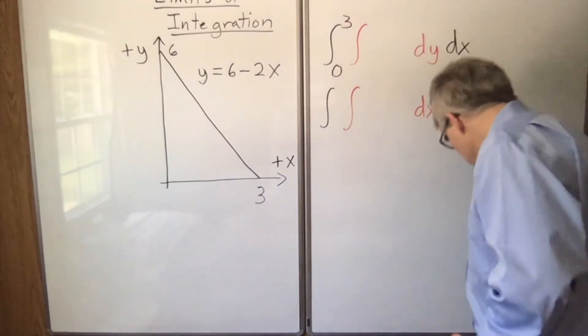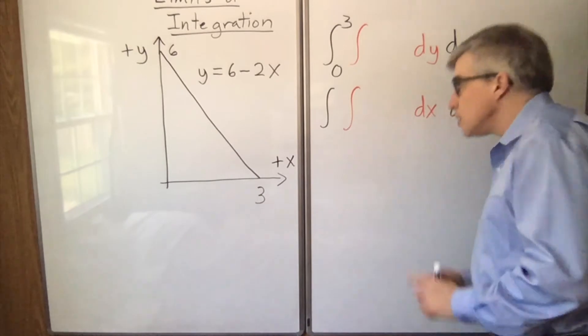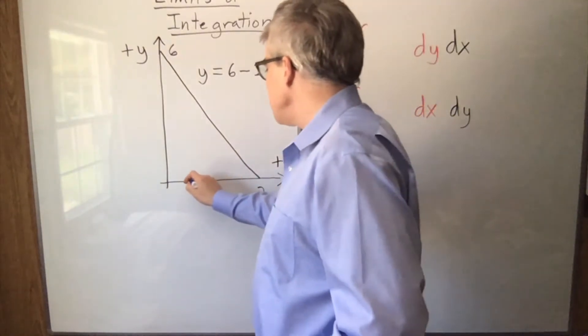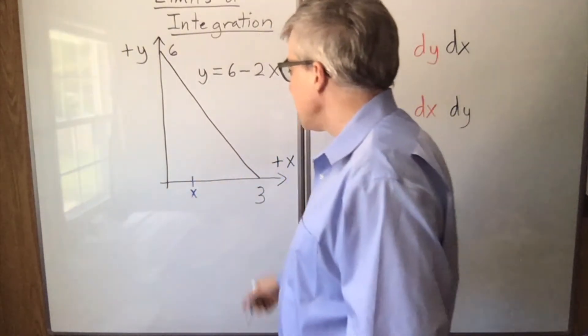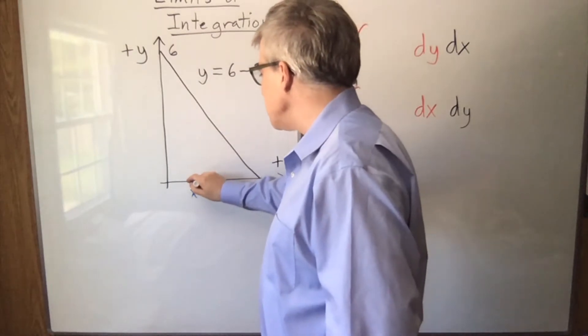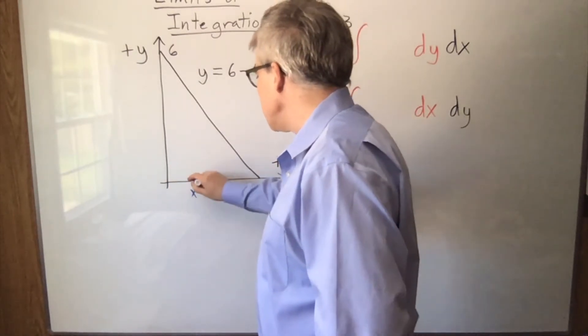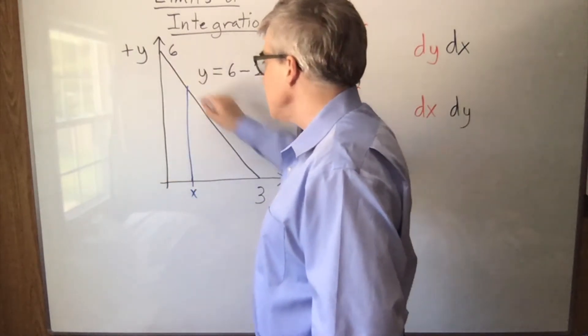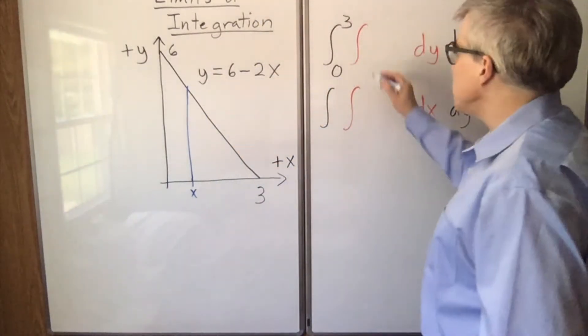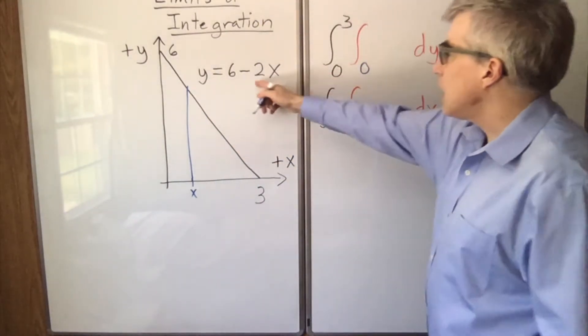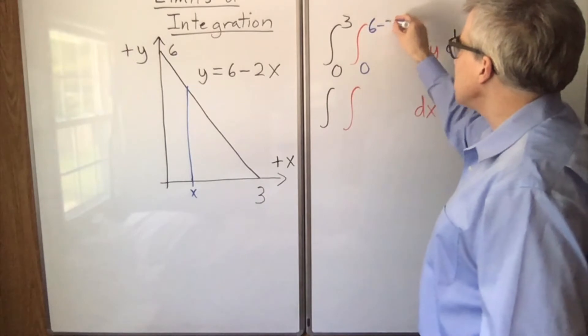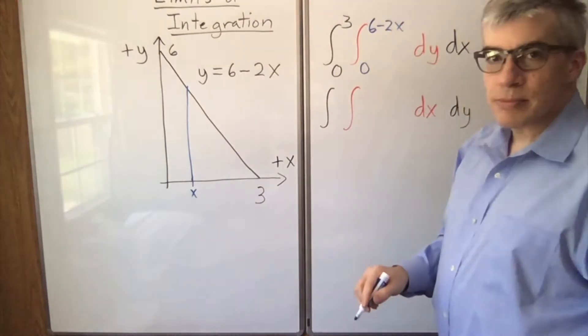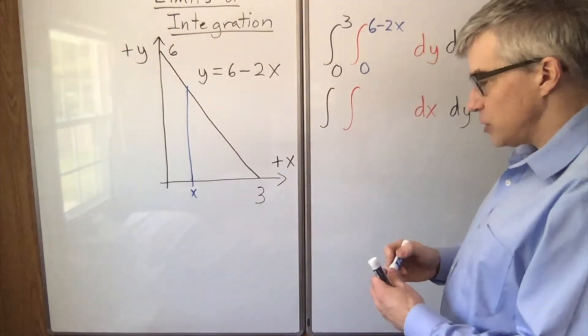The trickier bit is what's inside. For any given value of x, pick a random spot, y is going to range from this line up to this line, which means it's going to go from 0 up to 6 minus 2x. And those are the limits of integration for that triangle.